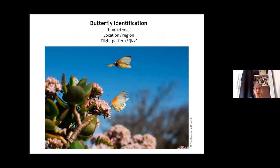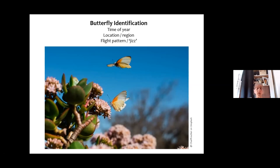Finally we get to butterfly identification. Some really important points: when you see a butterfly and you're trying to figure out what it is, definitely look at what time of year it flies. As I mentioned the orange-tip — I've heard of a dingy skipper as a spring butterfly, so if you see that in August, you should double-check because you could be mistaken. However, people in England have been seeing second-generation dingy skippers recently. It gives you at least good pointers.